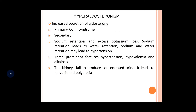Always remember: in Conn's syndrome there is hypertension, hypokalemia, and alkalosis. Hypokalemia happens because excess aldosterone causes more potassium to be excreted. As discussed in renal physiology, for one potassium ion excreted, one hydrogen ion is passively absorbed back into cells. So excess hydrogen ions accumulate in the blood, causing alkalosis.